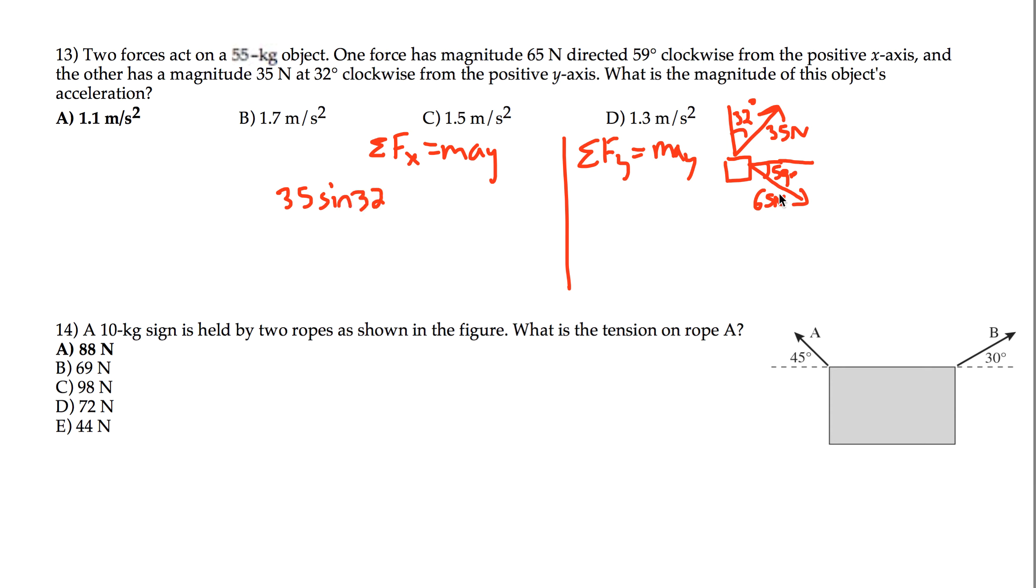And then the x-component of the 65 newton force, which is also going to the right, it's adjacent to the angle, it's going to use cosine, plus 65 cosine of 59 degrees.